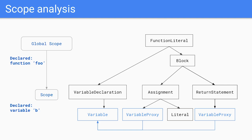The parser not only generates the AST but also constructs scopes. Each scope contains a list of all declared variables in it. In our little script, the global scope would contain the function foo, and the function's scope would contain variable b. After parsing is completed, we run scope analysis, in which we figure out that both variable proxies refer to the same variable b.